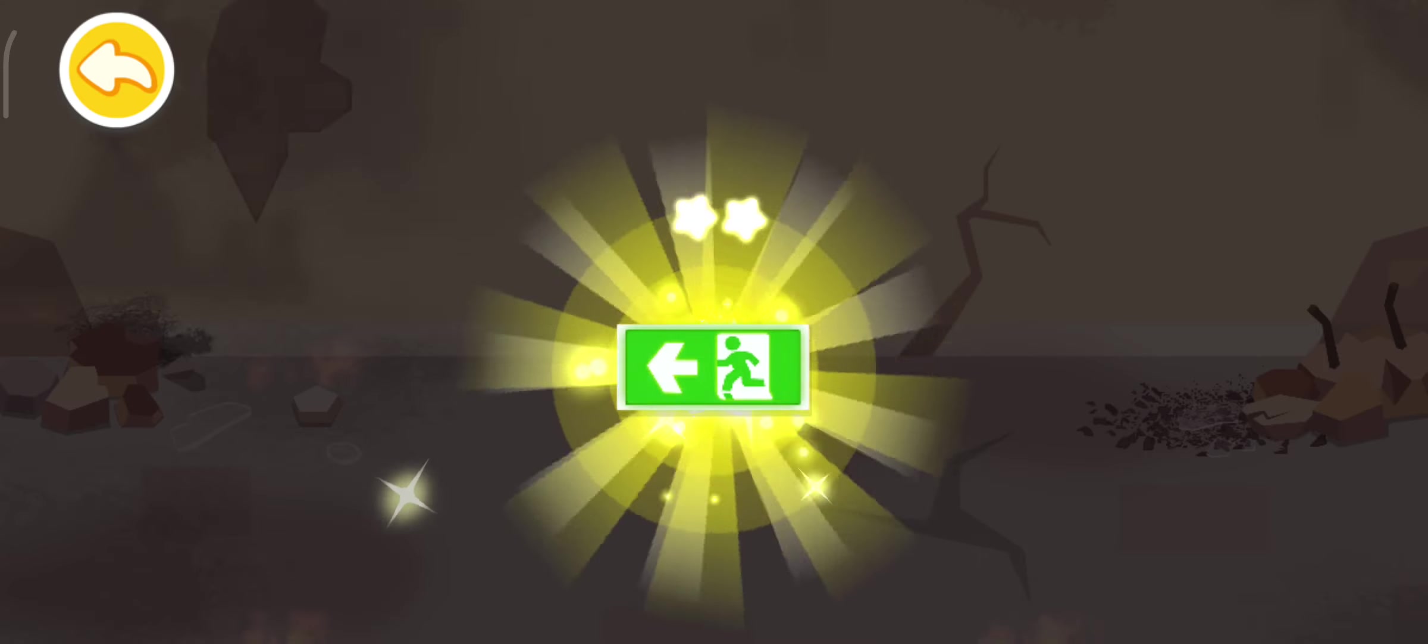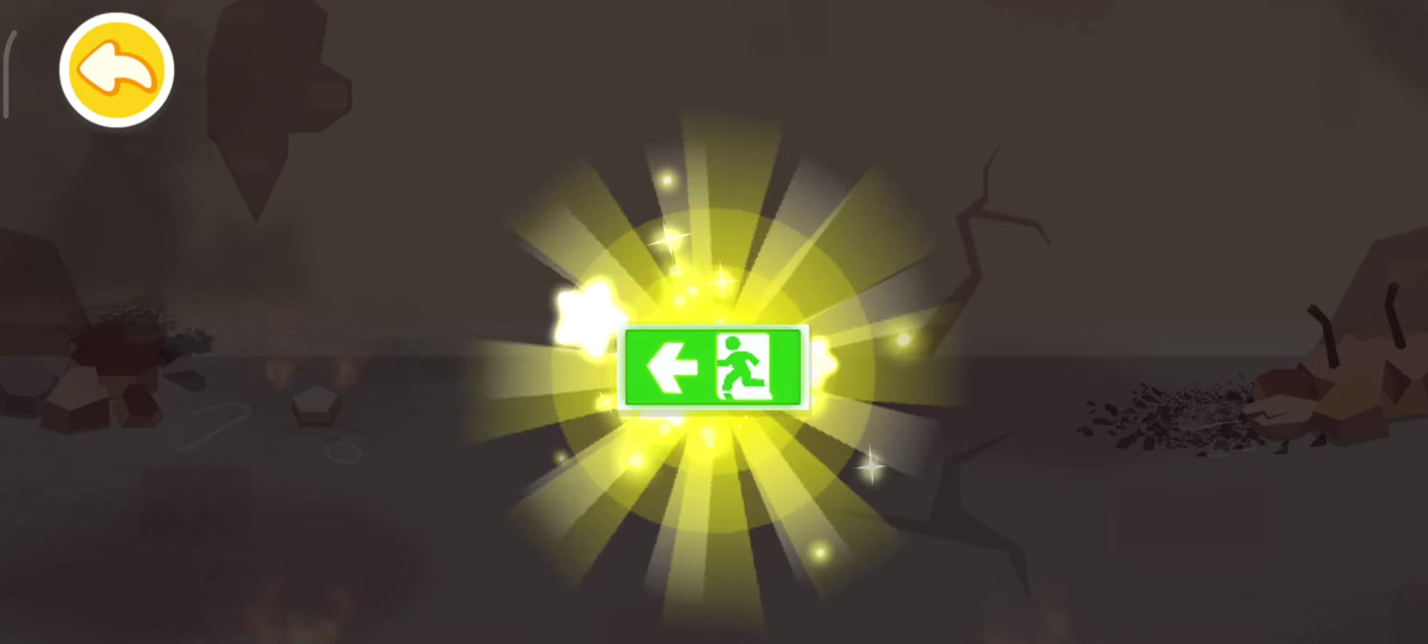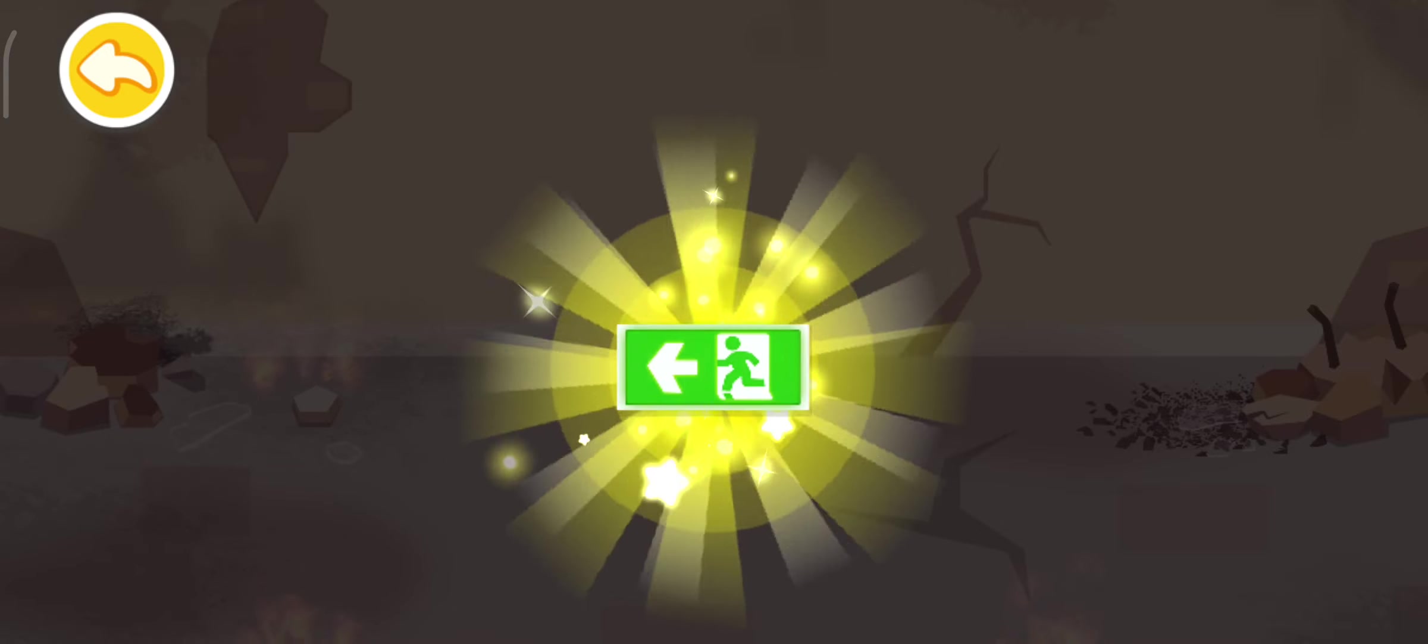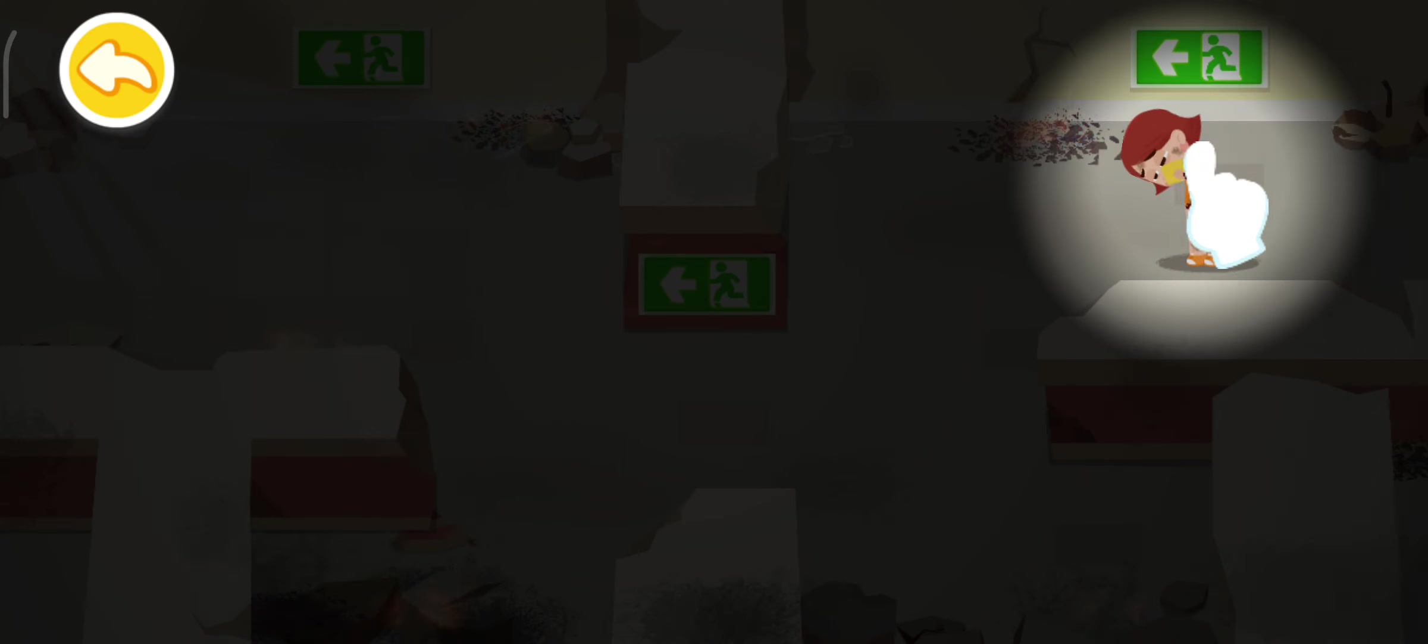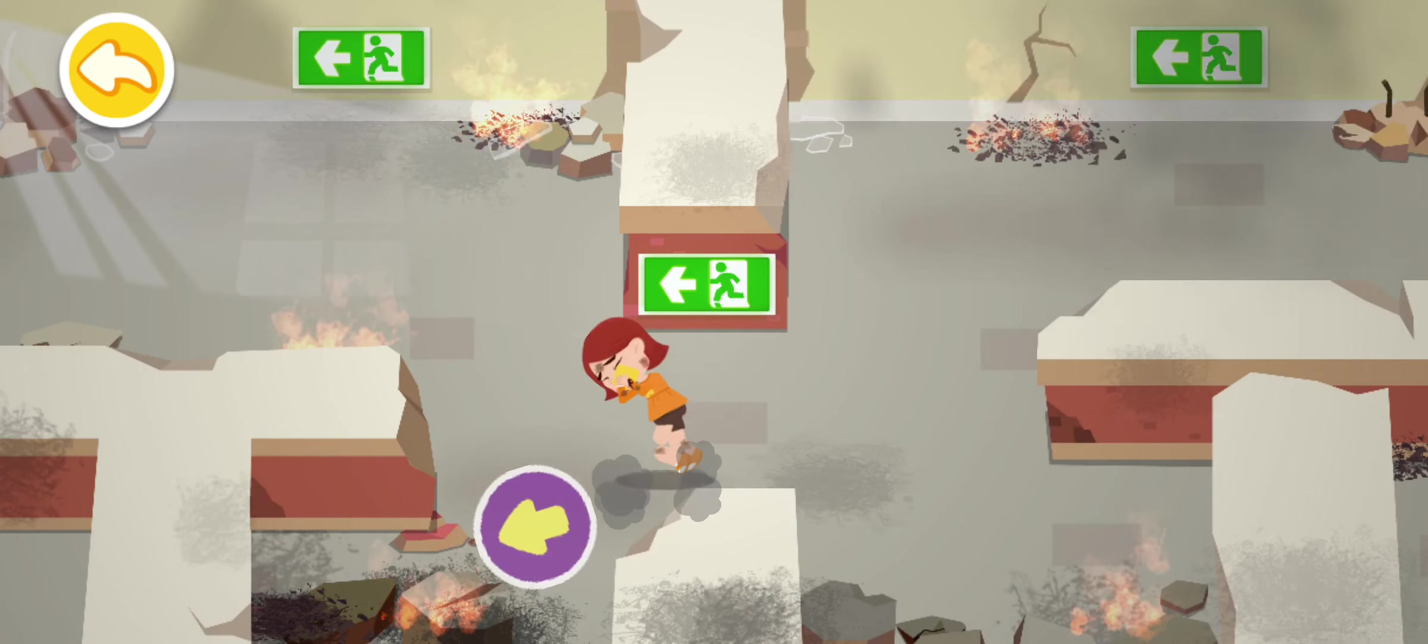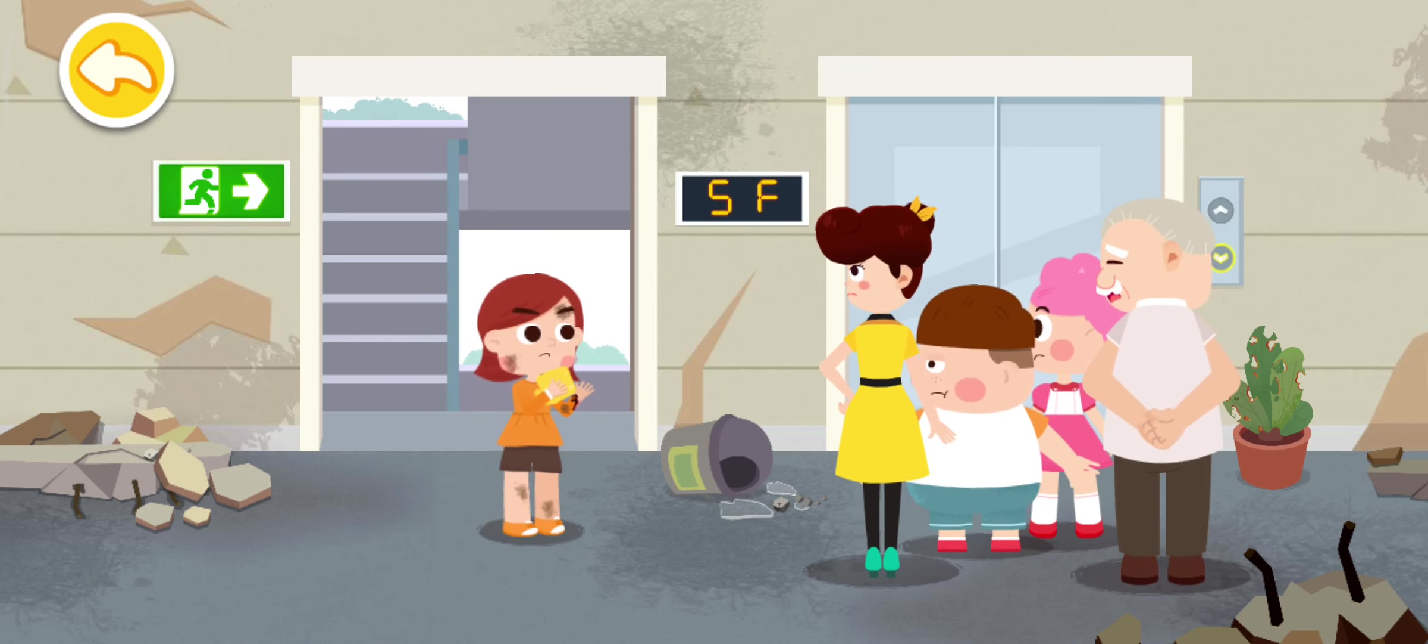When the fire breaks out, you should find an emergency exit sign right away and follow the directions to evacuate as quickly as possible. After an earthquake strikes or a fire breaks out, it's dangerous to take the elevator. Let's take the stairs.